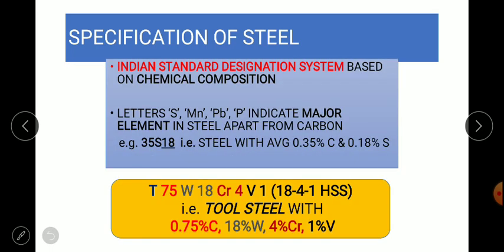Next, Indian standard designation system when alloying elements are present such as sulfur, manganese, lead, phosphorus, etc. One example is shown: 35S18 with specifically one underline provided. 35 indicates carbon divided by 100, meaning 0.35 percent carbon, whereas 18 is the alloying element sulfur. The underline indicates divided by 100, so 0.18 percent of sulfur.